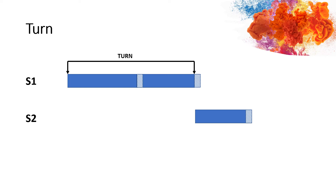Now let's look at the inner structure of a turn. Within the turn, there are some junctures where speaker change may occur. Those junctures are called TRPs, or transition relevance places. The units within the turn at whose completions speaker change may occur are called TCUs, or turn construction units. A turn may consist of at least one TCU. It can also consist of more than one TCU, as we can see in the turn by the first speaker here.